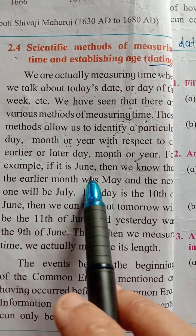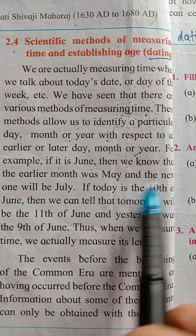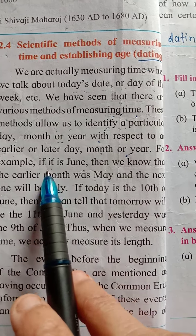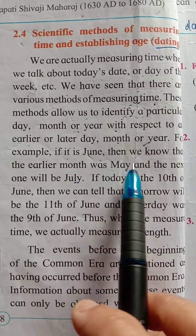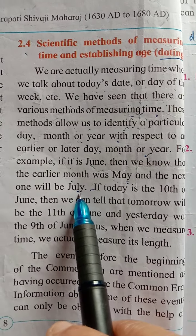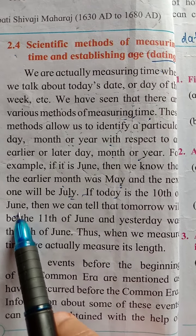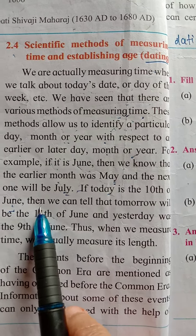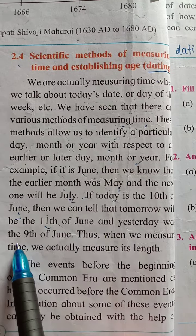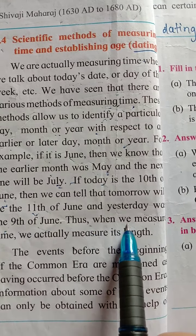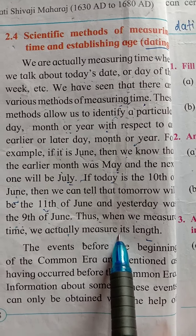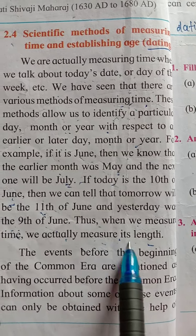For example, if it is June, then we know that the earlier month was May and the next one will be July. If today is the 10th of June, then tomorrow will be the 11th and yesterday was the 9th of June. Thus, when we measure time, we actually measure its length.